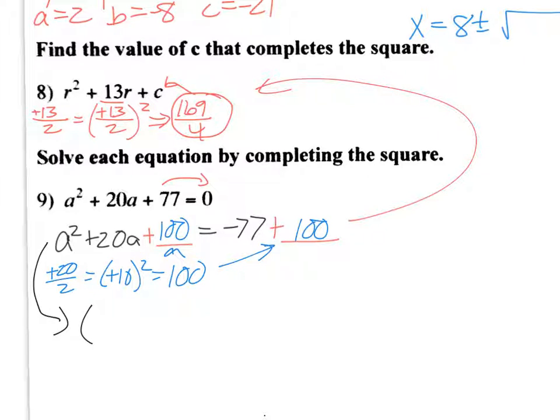Then we have to factor this. Well, that factors real easily. Remember, it's going to be A. And then all we do is take what we got right there, plus 10 squared equals. Then I have to combine those. That's going to give me 23.